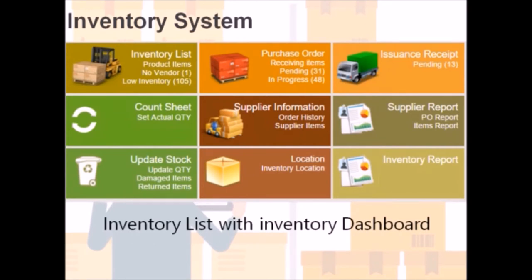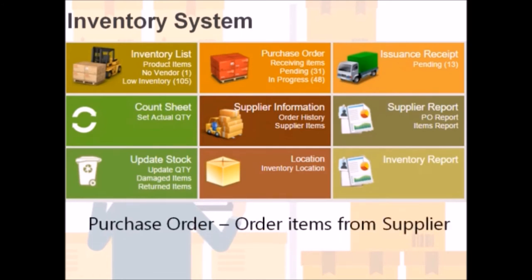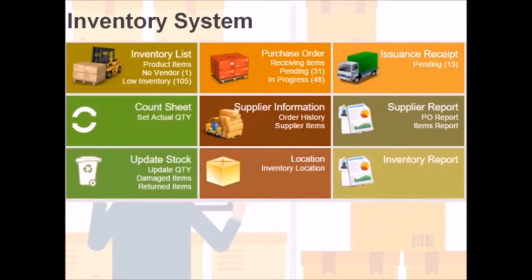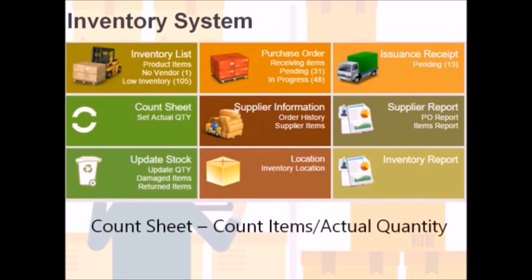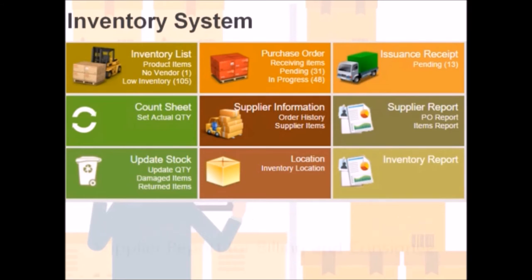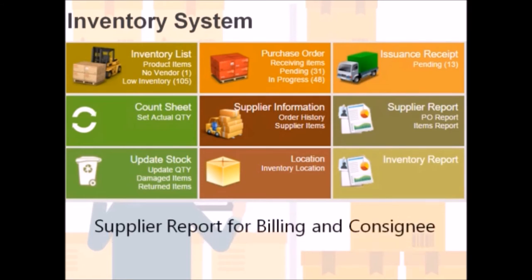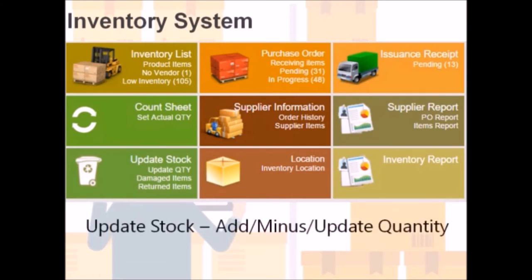The inventory list comes with the inventory dashboard, where we manage our item details. Purchase order keeps track of items ordered from the suppliers. Issuance receipts keep track of items transferred from another branch or store. Count sheet is used for recording physical counts and actual quantity. Supplier information contains the list and details of suppliers entered.